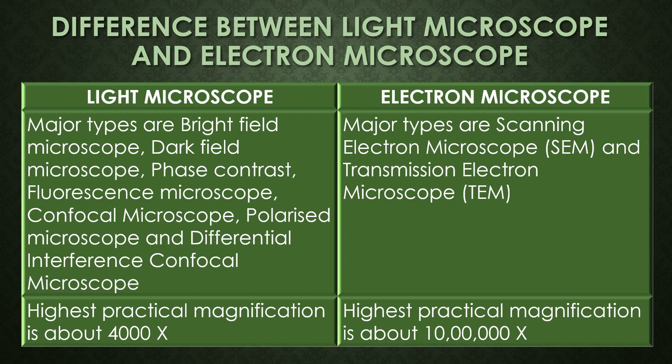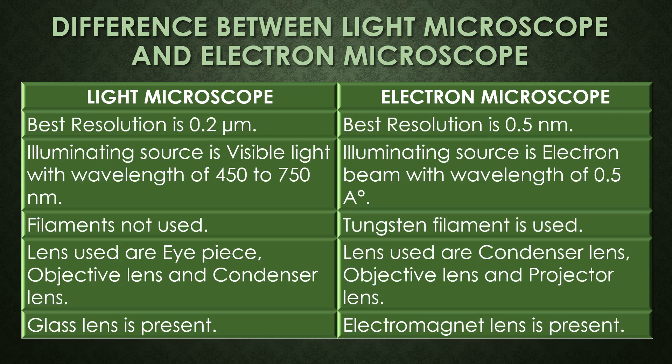The highest practical magnification of the light microscope is 4,000x and the highest practical magnification of the electron microscope is about 10 lakh times (1,000,000x). The best resolution of the light microscope is 0.2 micrometers and the best resolution of the electron microscope is 0.5 nanometers.